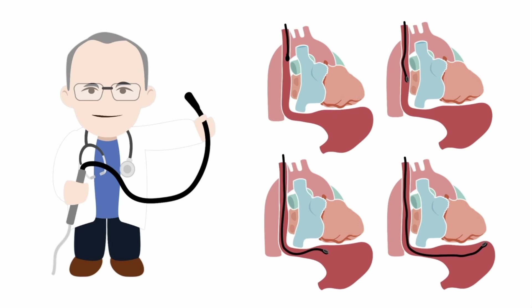To begin with, the mid-esophageal views, as the name suggests, are obtained with a TEE probe in the mid-esophageal position. This is the most useful of all the probe positions and allows us to obtain most of the views that we want of the heart.